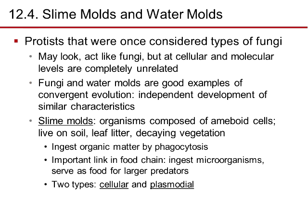Slime molds and water molds are protists once considered types of fungi. They may look and act like fungi, but at cellular and molecular levels are completely unrelated. Fungi and water molds are good examples of convergent evolution — the independent development of similar characteristics. Slime molds are composed of amoeboid cells, live in soil, leaf litter, and decaying vegetation, and ingest organic matter by phagocytosis. They are important links in the food chain, ingesting microorganisms and serving as food for larger predators.